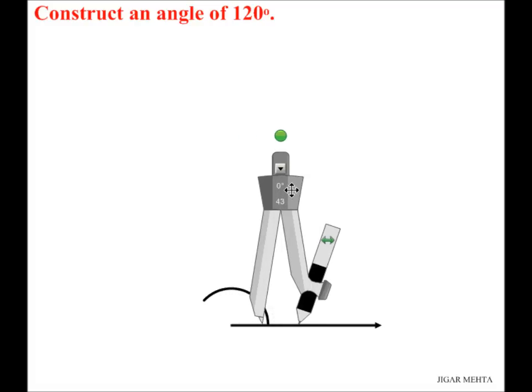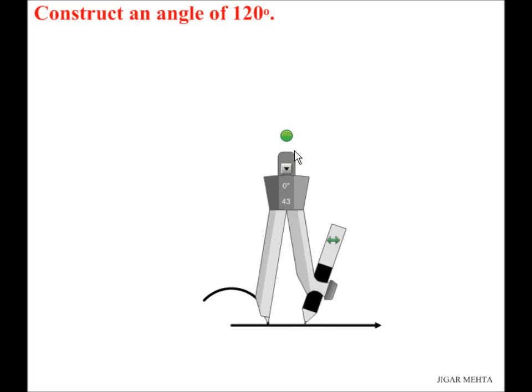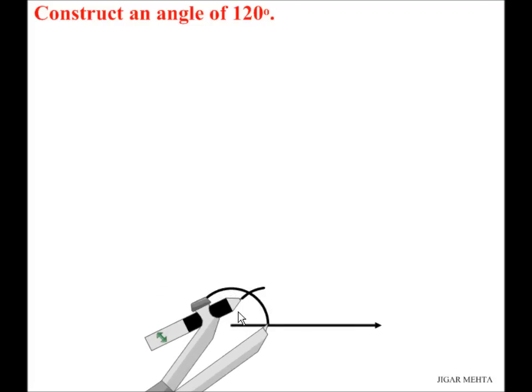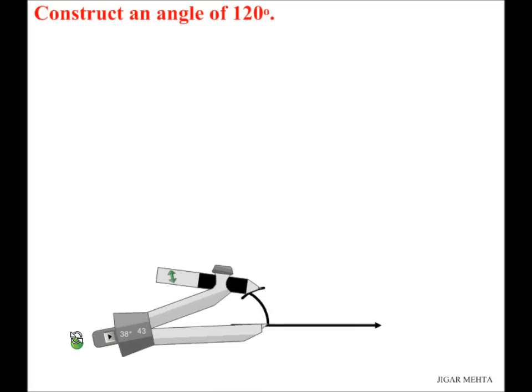Next I'm going to move my pointer to this place and turn my compass and cut a small arc here. This gives me an angle of 60 degrees.